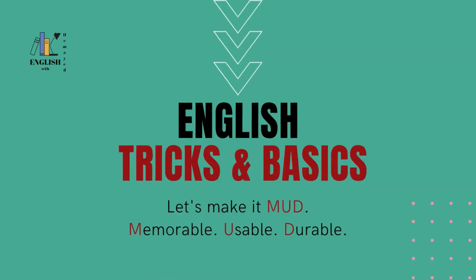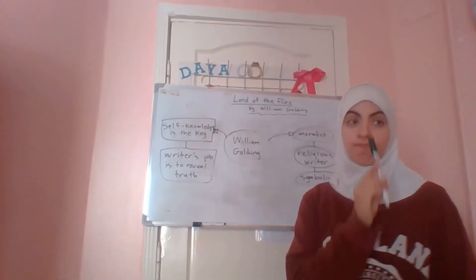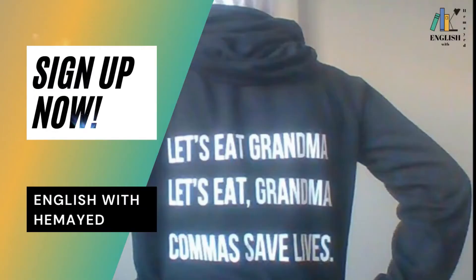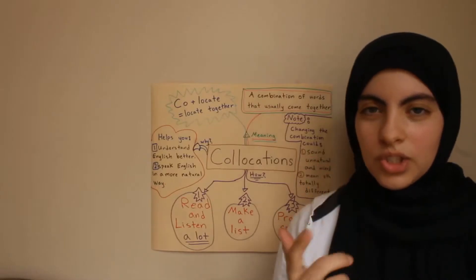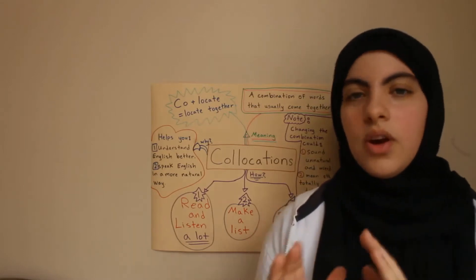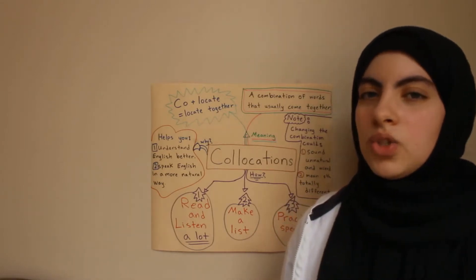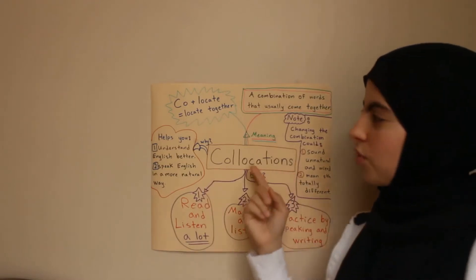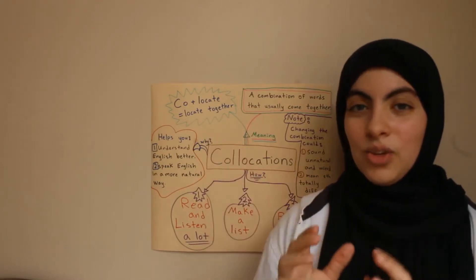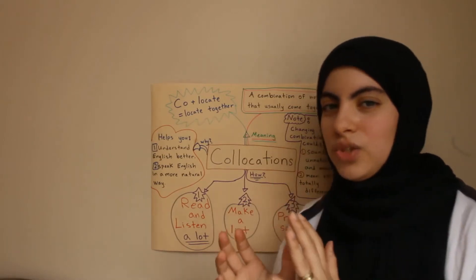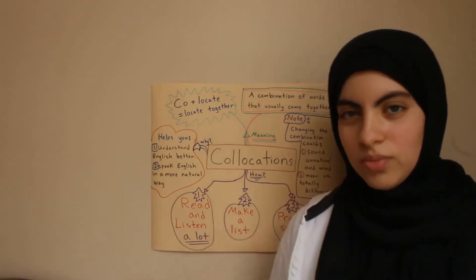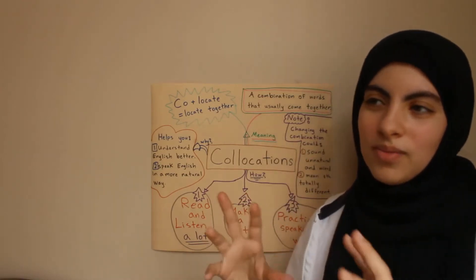What are collocations? Well, collocations are a combination of words that are usually found together. So, if you look at the word collocation and just move up here, you're going to see that you can find co and location. Co means together, locate is the position or the location, where the thing is.